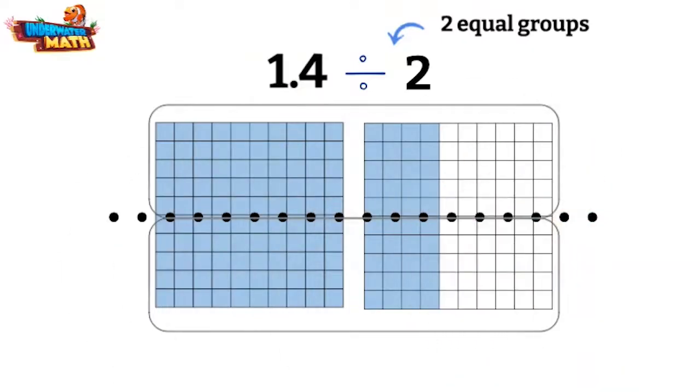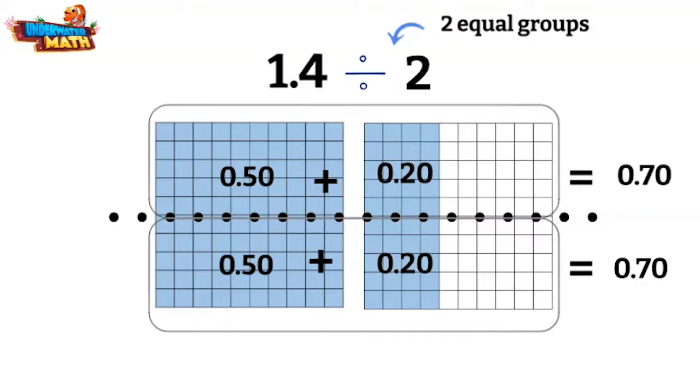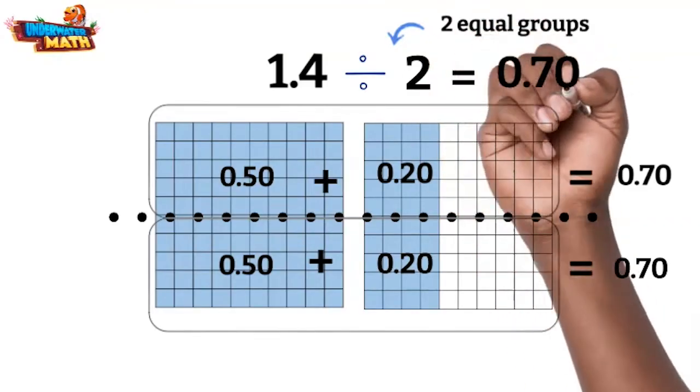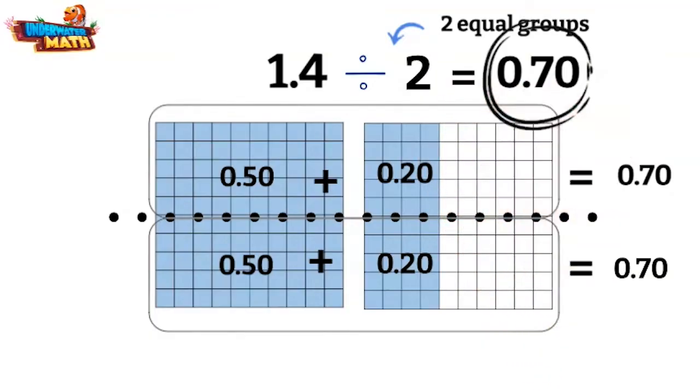We have 50 hundredths here and 20 hundredths here. Adding those together, we have a total of 70 hundredths in each group. So 1 and 4 tenths divided by 2 equals 7 tenths or 70 hundredths. Pretty cool!